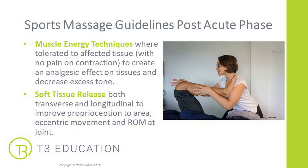Muscle energy techniques can be used on affected tissue — again with no pain on contraction — creating an analgesic effect and decreasing excess tone or hypertonicity. Soft tissue release techniques, both transverse and longitudinal, can be introduced to begin improving proprioception, focusing on eccentric movement and improving range of movement at the joint. Always ensure there are no signs of inflammation or swelling. If signs are present and you want to use soft tissue release, focus on working proximal to the injury site — above it, closer to the midline.